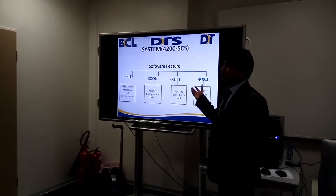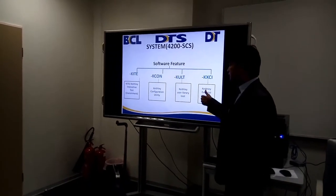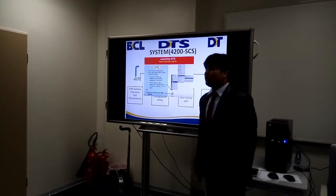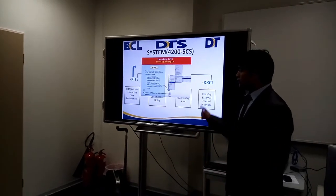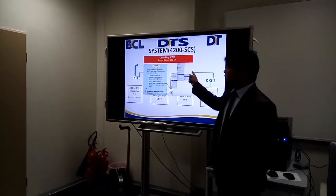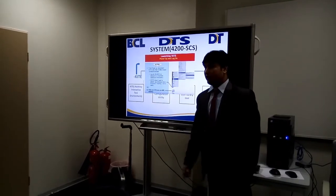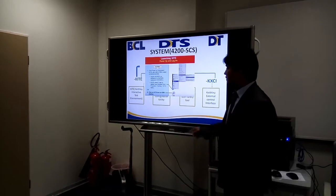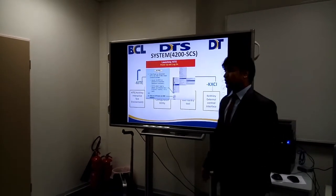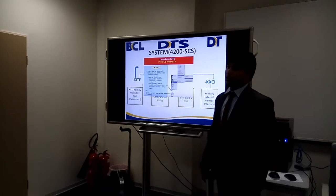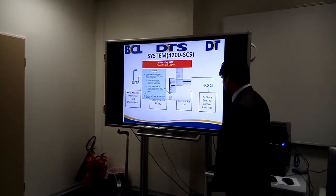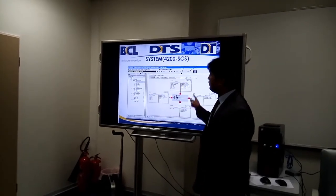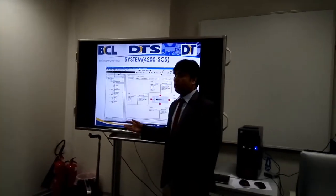This is called the external control interface, which we already discussed. One more important point is how to launch this software. It is very simple — when we turn on the system, it will automatically open the KIT software. In case you disconnected or closed the software, it is very simple: you can double-click from your desktop, or you can go to the program, find the KIT, and open it. This is a very important display point — we need to understand how to use this software.